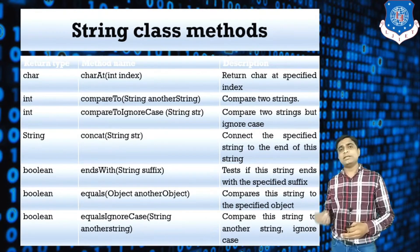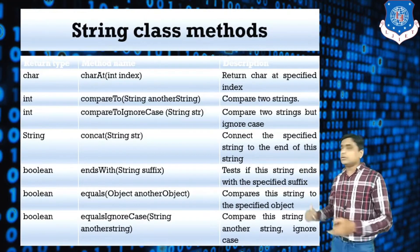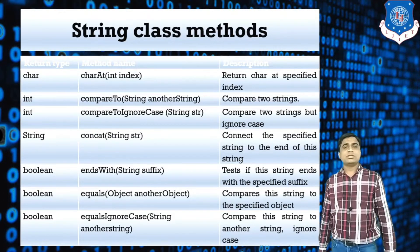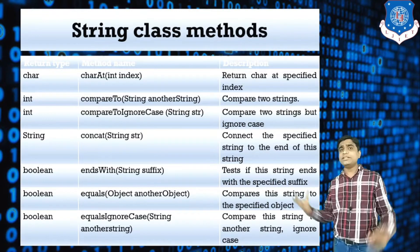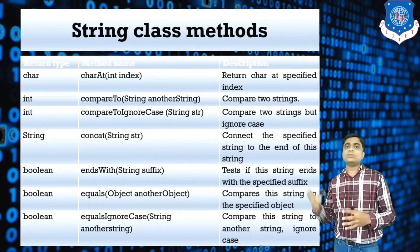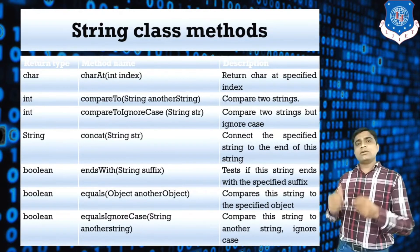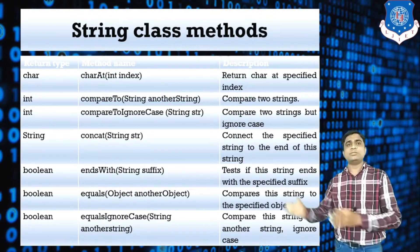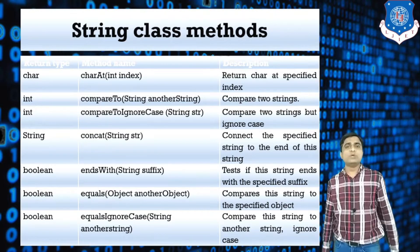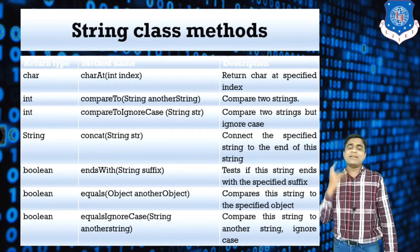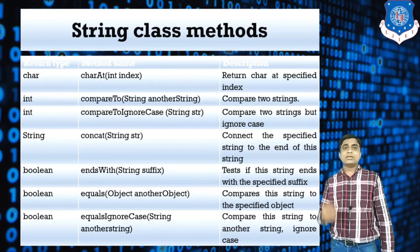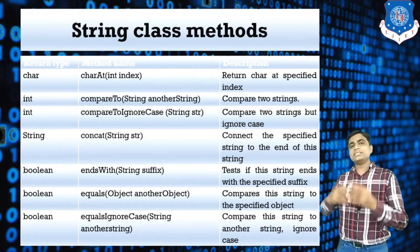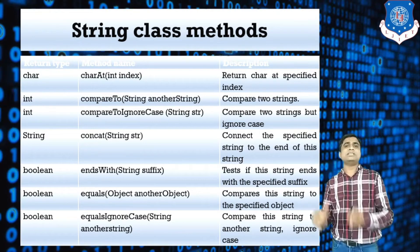The next method is concat, used for concatenation — it joins two strings together. Next is endsWith: if you want to check whether a string ends with a specific character or specific string, this method returns a boolean — true or false. So you can use this to check if any string ends with 'xyz', 'abc', or whatever you want to check by passing it as the method argument.